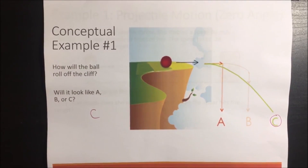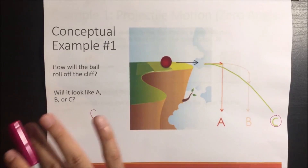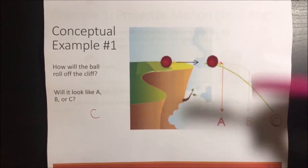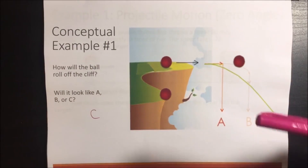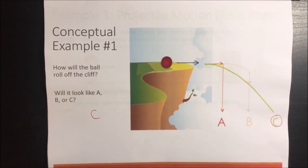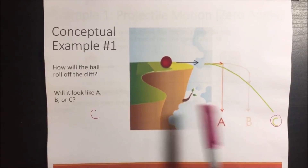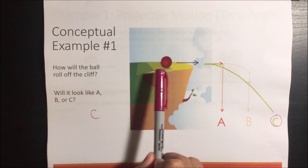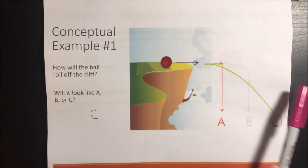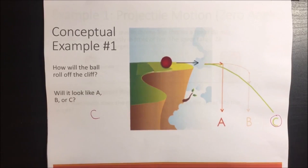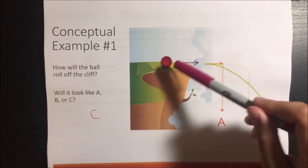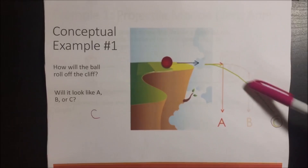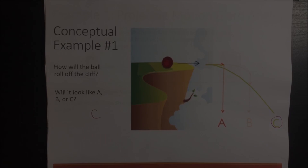In Projectile Motion, the object moves in both the X direction and the Y direction. In the Y direction, gravity is going to be pulling it down. But if something has been moving towards the right, it's always going to be also moving in that right direction. So it's not going to be like cartoons where they run and then fall straight down — it moves like C.